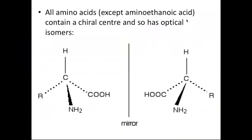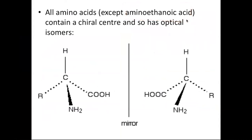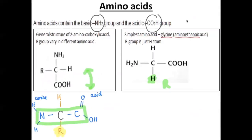All amino acids except amino ethanoic acid contain a chiral center. A chiral center is a carbon that has four different groups or four different atoms attached to it. That means if it has a chiral center, it has an optical isomer. Each amino acid except amino ethanoic acid will exist in two forms — mirror images of each other. Why not amino ethanoic acid? If you look back at the structure, that central carbon is attached to two hydrogens, so it doesn't count — it has to be all different bonds.